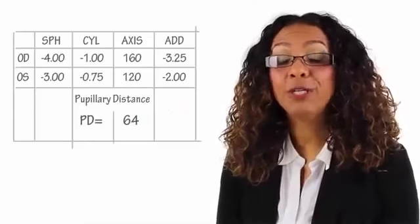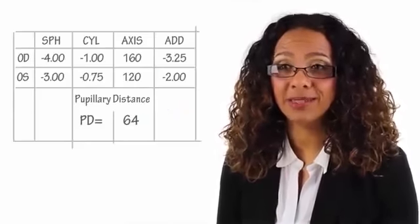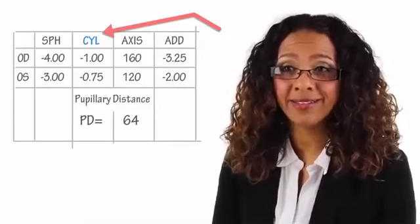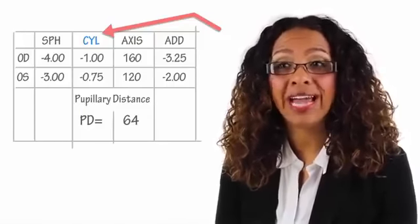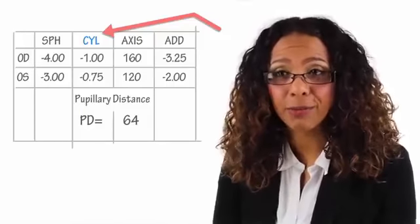These next terms won't always be seen on your prescription — it just depends if you have astigmatism. Astigmatism is a visual condition where the eye isn't completely spherical but is shaped more like a football. If you do have astigmatism, you'll see CYL, which is the degree to which your eye is shaped like a football.